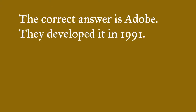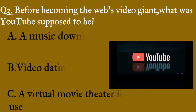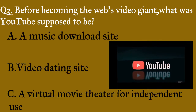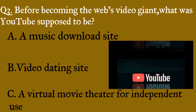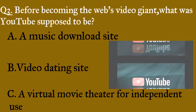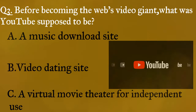The correct answer is Adobe. They developed this in 1991. Question three: before becoming the web's video giant, what was YouTube supposed to be? A) a music download site, B) a video dating site, C) a virtual movie theater for independent use.